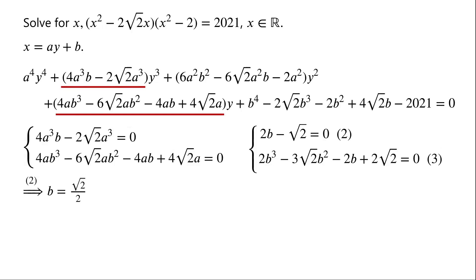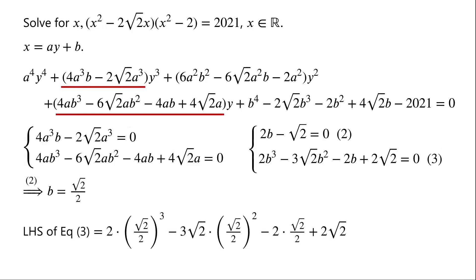From equation 2, we get b = √2/2. We check whether this satisfies equation 3. When b = √2/2, the left-hand side of equation 3 equals 2·(√2/2)³ − 3√2·(√2/2)² − 2·(√2/2) + 2√2. Since (√2/2)³ = √2/4 and (√2/2)² = 1/2, this simplifies to √2/2 − 3√2/2 − √2 + 2√2, which equals zero. So b = √2/2 is a solution of the system of equations.